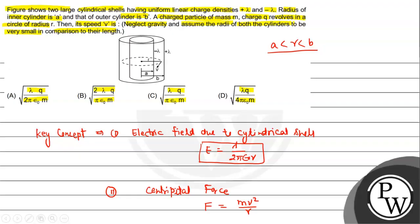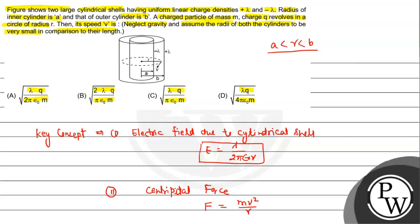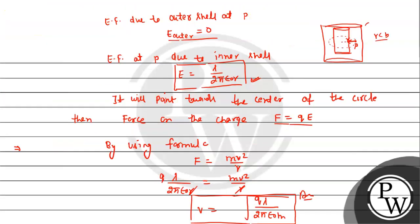The answer is v = √(qλ / 2πε₀m), which corresponds to option A. Hope you understood. All the best.